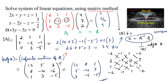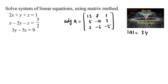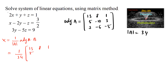This is the adjoint of matrix A. Now let's find X. X = A⁻¹B = (1/det(A)) × adj(A) × B = (1/34) × [13, 8, 1; 5, −10, 3; 3, −6, −5] multiplied by the constant matrix [1; 3/2; 9].